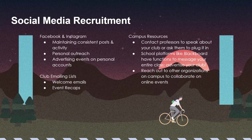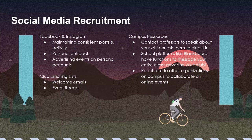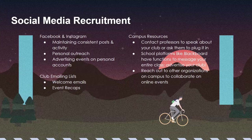Thinking about recruitment and outreach — this past quarter, recruitment was really difficult for a lot of clubs because you don't get the opportunity to table in person. The primary way around that is through social media, which is a very powerful tool. Getting started with Facebook and Instagram — one of the most important things with having a social media platform is being able to maintain consistent posts and activity, whether it be having your events scheduled to be posted on a certain day and time, or having people constantly comment on posts, tag people, and drive a lot of engagement.